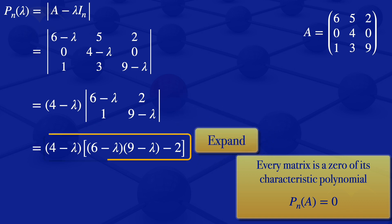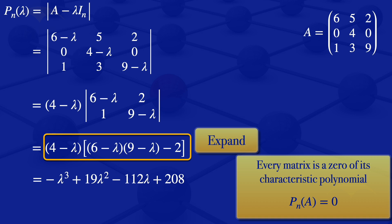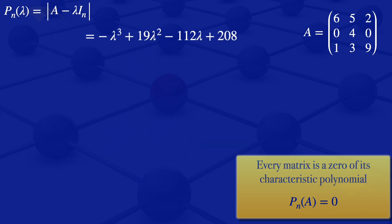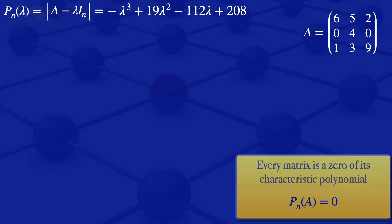Expanding this expression, the result we get is minus lambda cubed plus 19 lambda squared minus 112 lambda plus 208. So the characteristic polynomial of the matrix A is: P(λ) = minus lambda cubed plus 19 lambda squared minus 112 lambda plus 208.